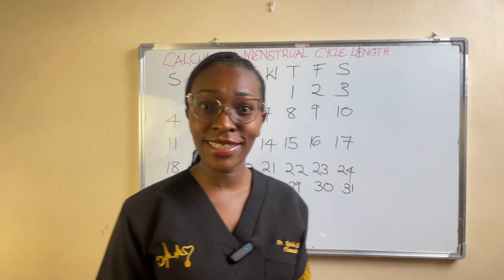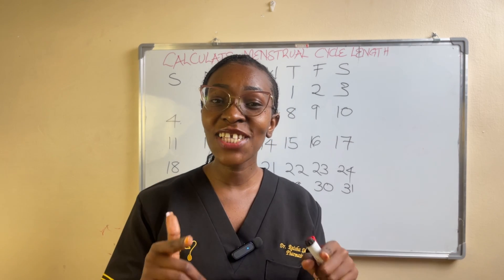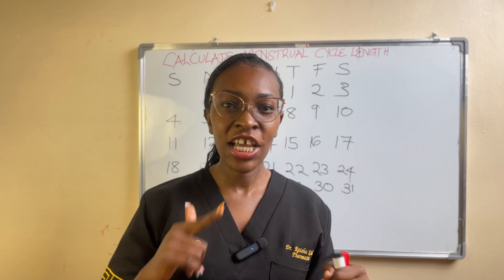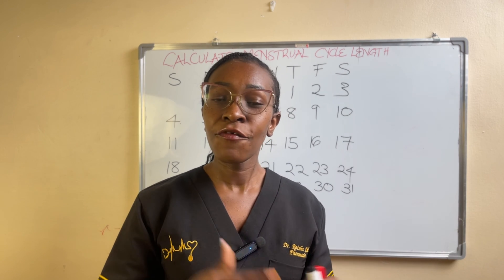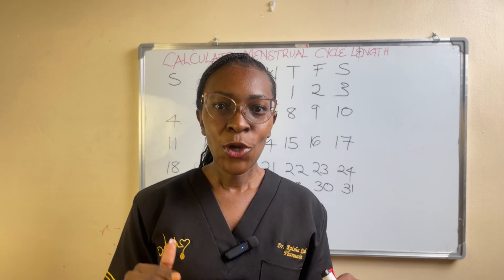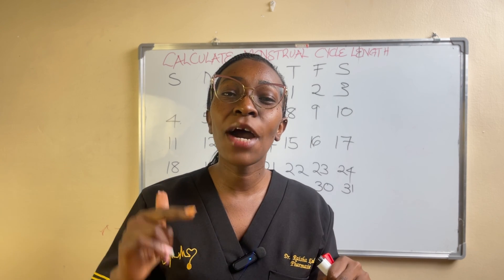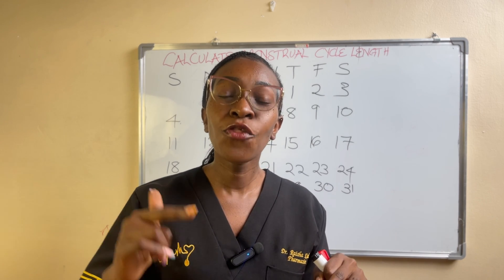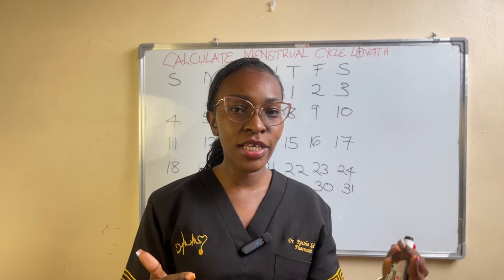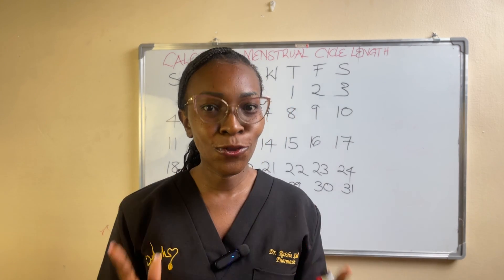What do you understand when you hear the term menstrual cycle length? When I ask most ladies, they tell me two days, four days, five days, one day. But no — your menstrual cycle length does not refer to the number of days through which you bleed. So if you are having your period for two days, your menstrual cycle length is not two days.